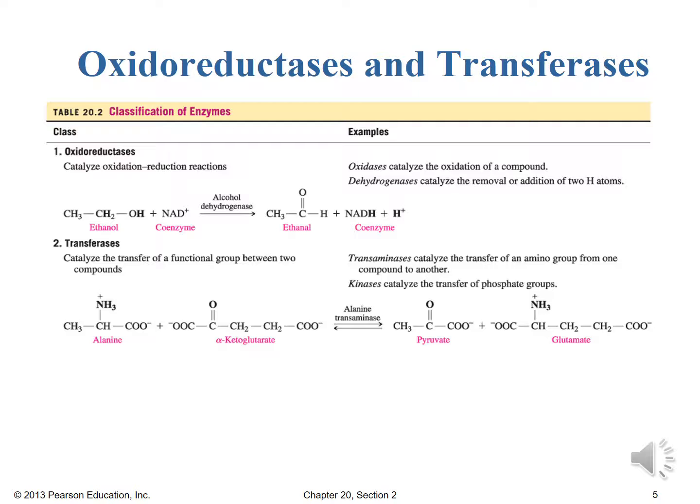So we see here alanine plus alpha-ketoglutarate in an alanine transaminase reaction is in equilibrium with pyruvate plus glutamate.